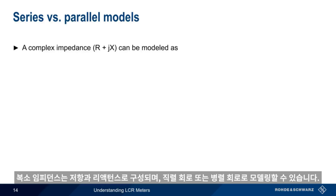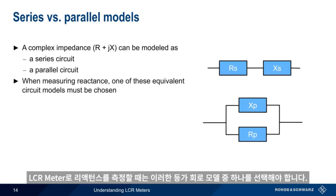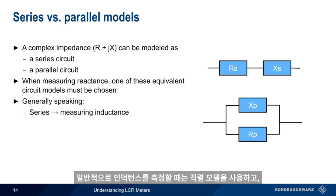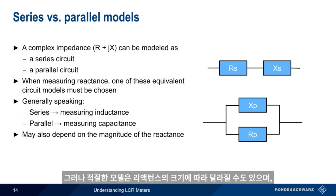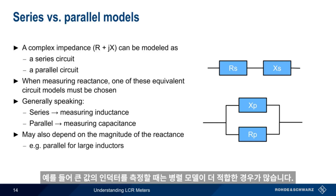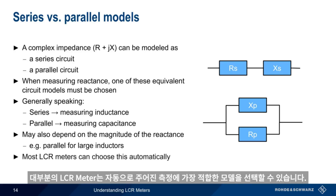Complex impedances consist of a resistance and a reactance, and these can be modeled either as a series circuit or as a parallel circuit. When measuring reactance with an LCR meter, one of these equivalent circuit models must be chosen. Generally speaking, the series model is used when measuring inductance, and the parallel model is used when measuring capacitance. However, the appropriate model may also depend on the magnitude of the reactance — for example, when measuring large inductors, the parallel model is often more appropriate. Most LCR meters will automatically choose the most appropriate model for a given measurement.